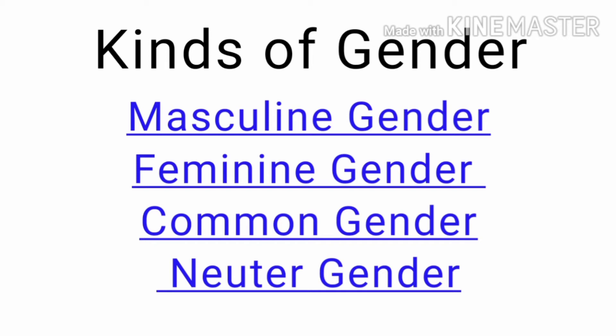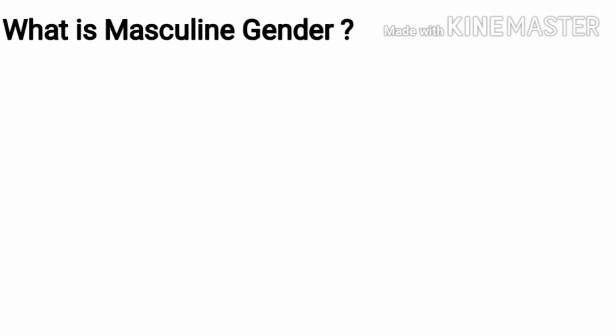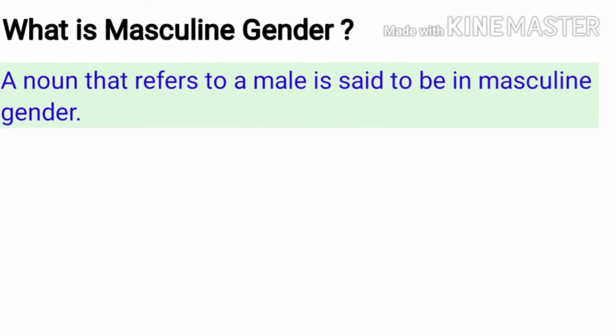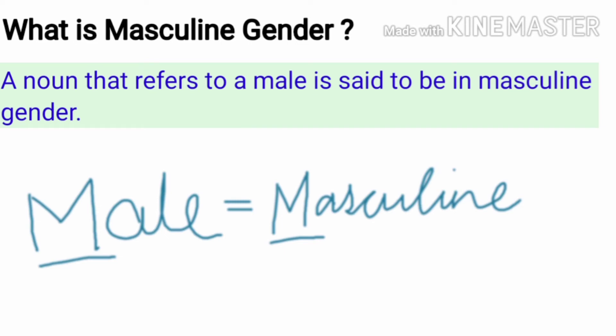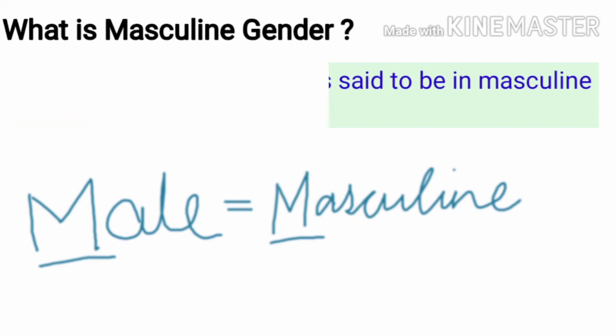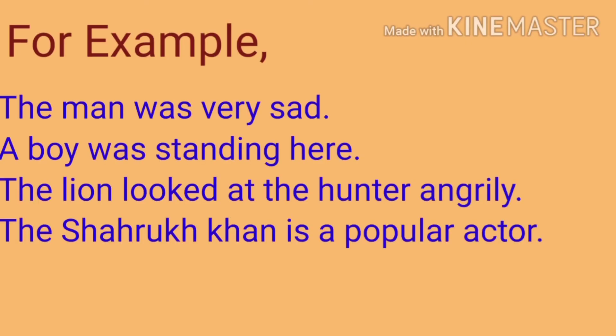So, on the basis of this, the first kind of noun on the basis of gender is masculine gender. What is masculine gender? A noun that refers to a male is said to be in masculine gender. To understand it simply, you can say that masculine is for male. Any noun which refers to a male category is known as masculine gender. Let's see some examples: the man was very sad, a boy was standing there, the lion looked at the hunter angrily, Shah Rukh Khan is a popular actor.